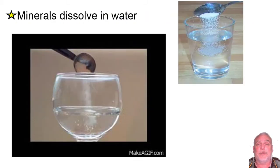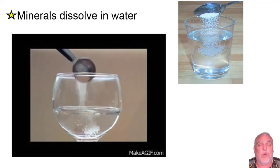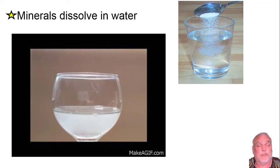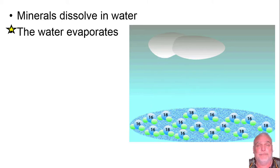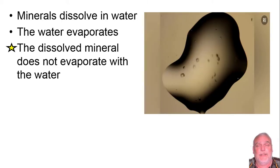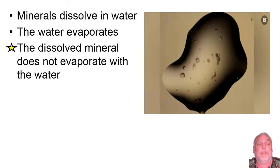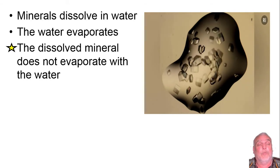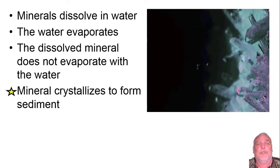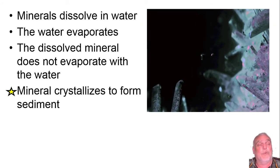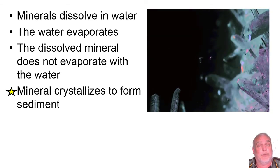Chemical sedimentary rock forms something like this: first you dissolve minerals - not just salt of course - in water. Then the water evaporates. The minerals that were dissolved in the water don't evaporate; they recrystallize as the water evaporates. Those new rock crystals form the sediment that chemical sedimentary rock is made out of.